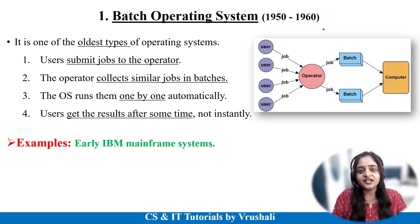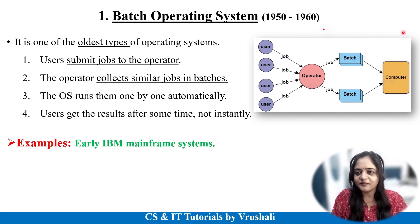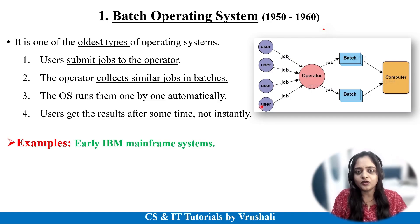Now let's understand different types of operating system. The first type is called batch operating system, which is one of the oldest types of OS, invented in 1950. In batch OS, users are not directly interacted with the computer — they interact with the operator. For example, suppose these two users want to execute a C programming file, so they send their job to the operator. These two other users want to execute a Ruby programming file, so again they send their job to the operator.